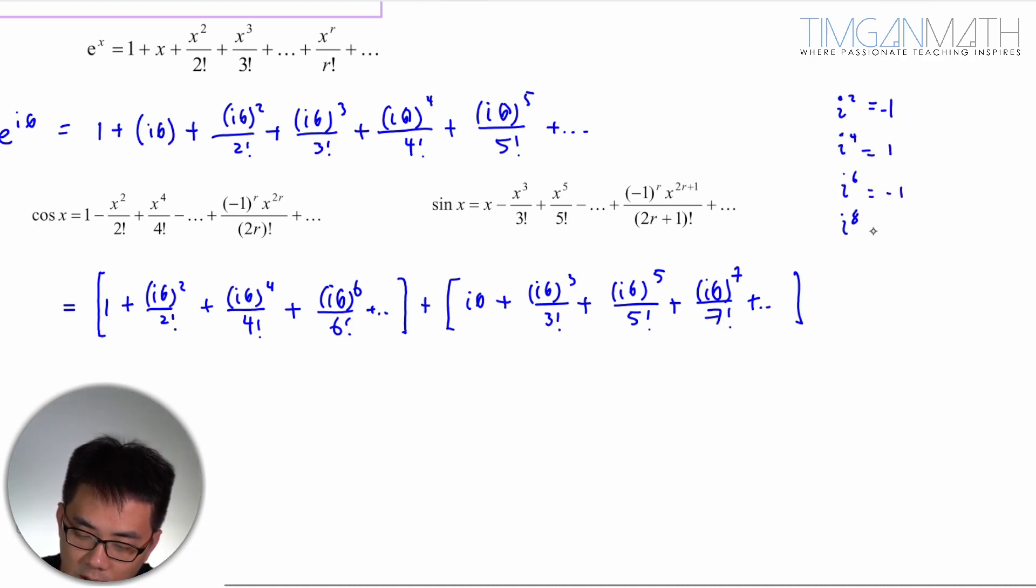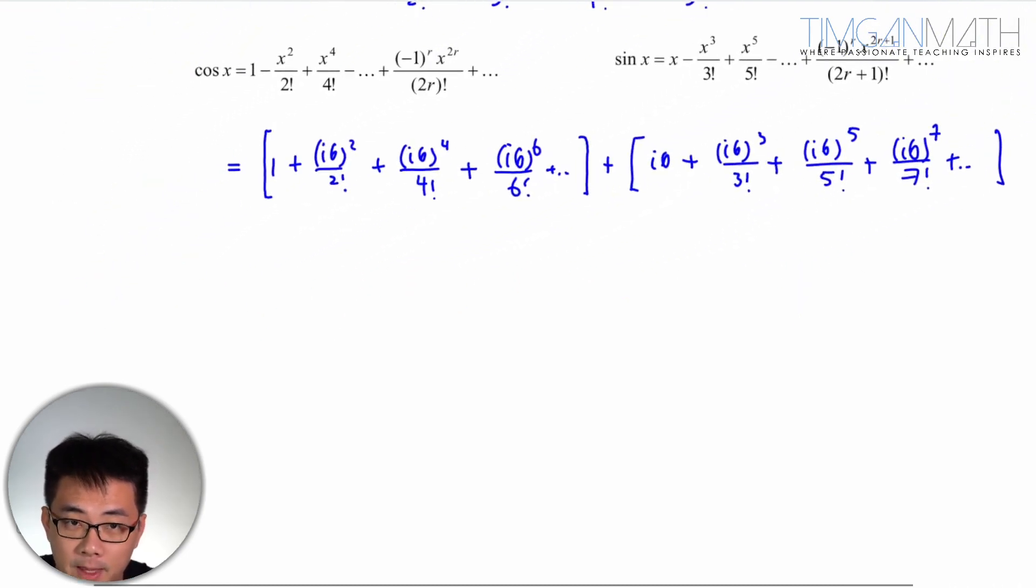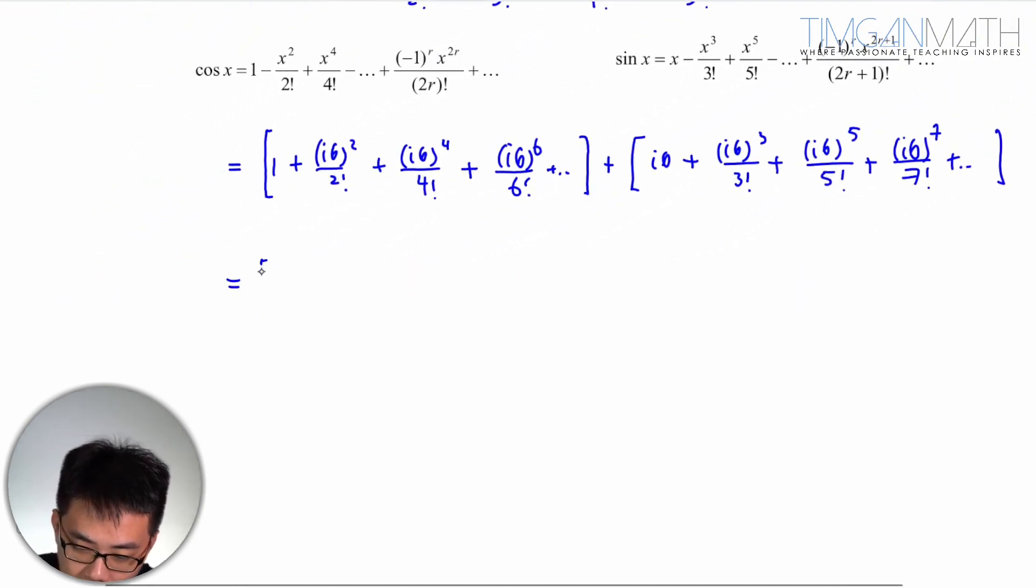So this case here you will get 1 - θ²/2! + θ⁴/4! - θ⁶/6! and so on.